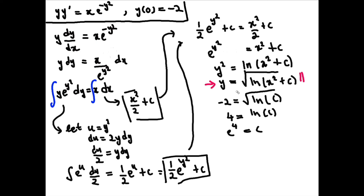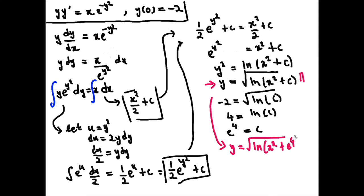Now we can substitute e to the 4 back in, so the final answer becomes y equals the square root of the natural log of x squared plus e to the 4. That's the final answer — you could also leave it in the general form, but this is the specific solution.